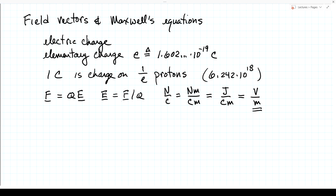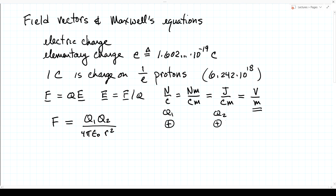Coulomb, after whom the Coulomb is named, conducted classic experiments showing that the force between two charges — the magnitude — is the product of the charges divided by 4π ε₀ times the square of the distance between them. Two positive charges q₁ and q₂ experience a force of repulsion, equal and opposite. If both charges are negative, the product is still positive and we still get repulsion. If one is positive and one is negative, we get a force of attraction. This is called Coulomb's law.